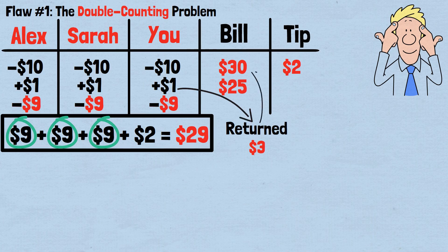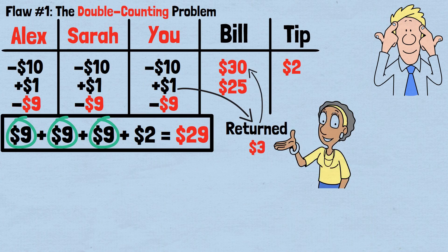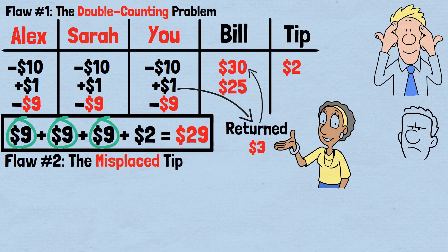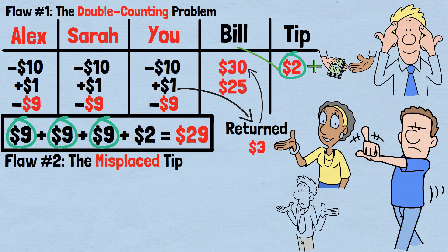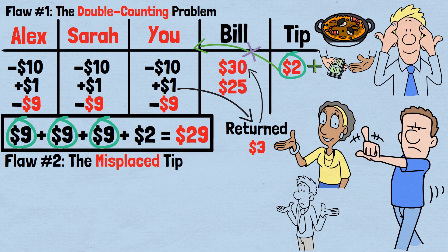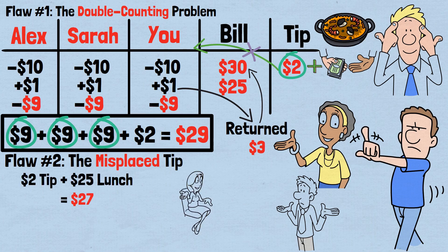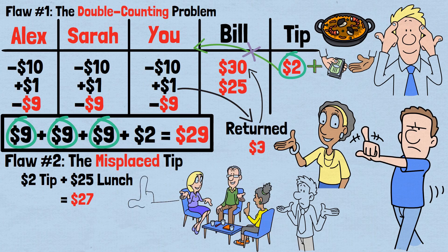To get back to our original $30, we would need to add that $3 back in. Flaw number two: the misplaced tip. The second problem is how we're incorrectly factoring in the busboy's tip. In the faulty reasoning, we add the $2 tip to what you paid, as if it's additional money that appeared from nowhere. Because the busboy took his $2 tip, that money was never returned to you, Alex, or Sarah. Therefore, it must be considered as part of the total cost of your lunch experience. You paid $27 total — of which $25 went to the restaurant for food and $2 went to the busboy for service.